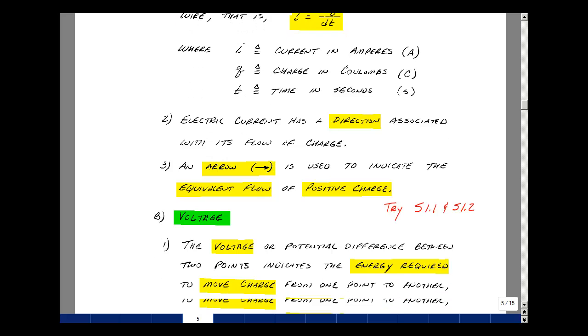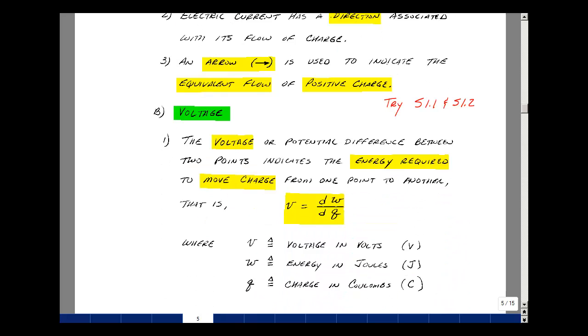Our next definition is that of voltage. The voltage, or potential difference between two points, indicates the energy that's required to move charge from one point to another. Voltage is the change in energy over the change in charge. Again, if you take the change small enough, it becomes a derivative. V is our voltage in volts, W is our energy in joules, and Q is our charge in coulombs.